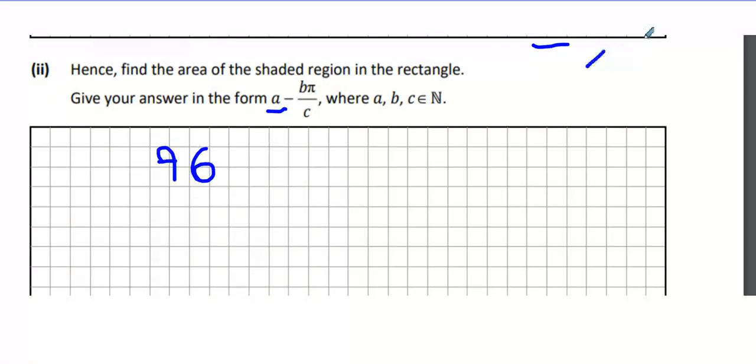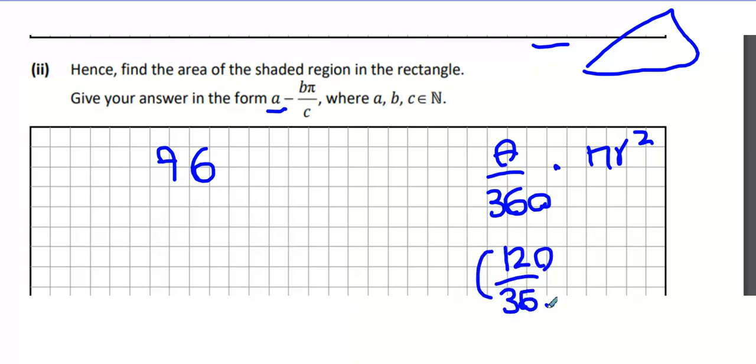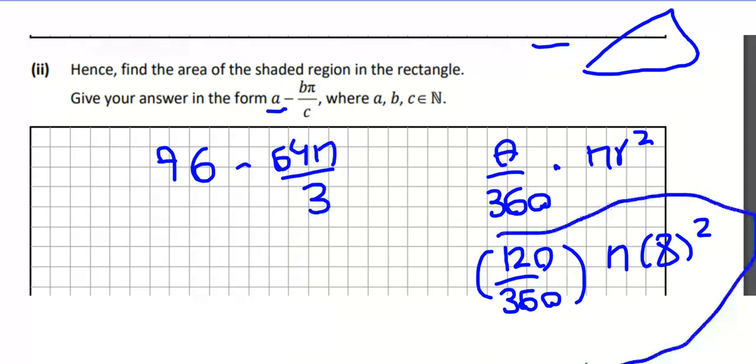Now, I've got to take away the sector. The sector we said is theta over 360 multiplied by pi r squared. Theta is 120. That's 360, pi, and 8 squared. Put it into the calculator, minus 64 pi all over 3. Throw all that into the calculator and you get 64 pi. And that there is your answer.